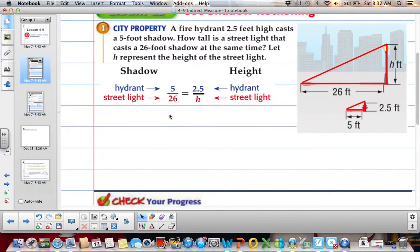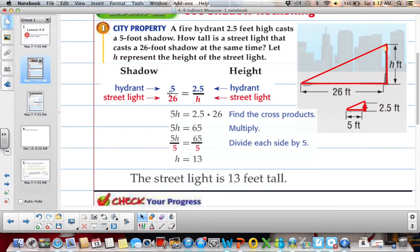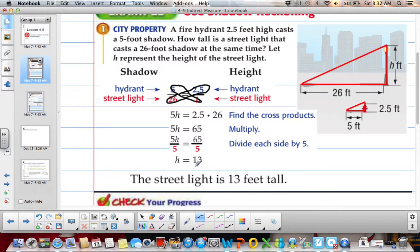Now we have our proportion, and we are going to solve. So remember we do cross products. So we would remember 5 times H, and 26 times 2.5. So 5H equals 2.5 times 26. Then we multiply, and we divide, and we get that the street light is 13 feet tall.